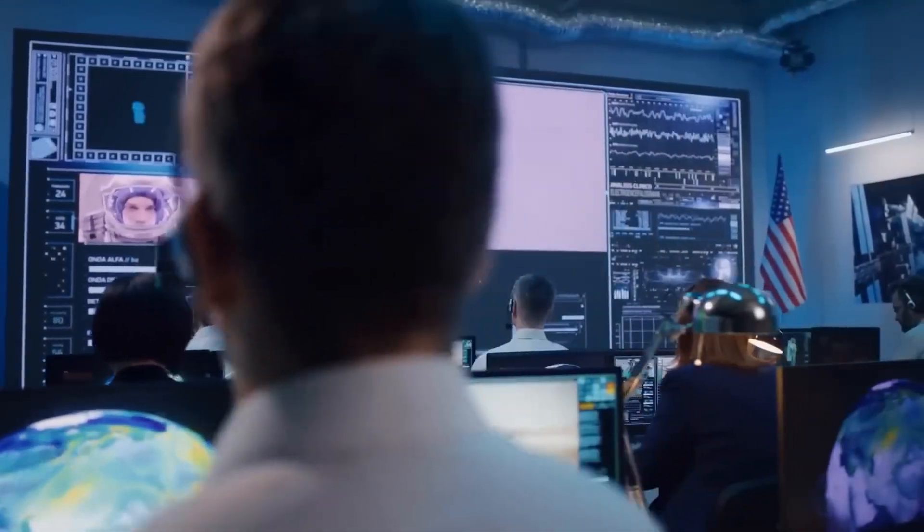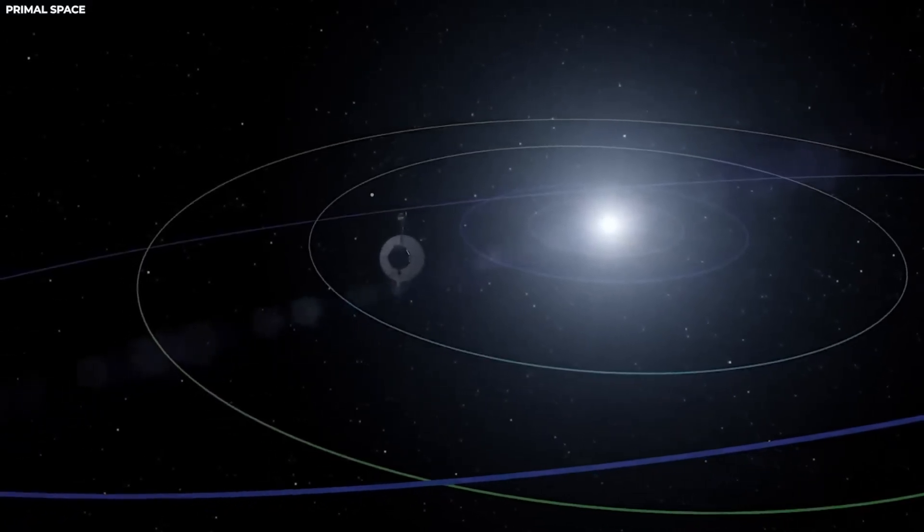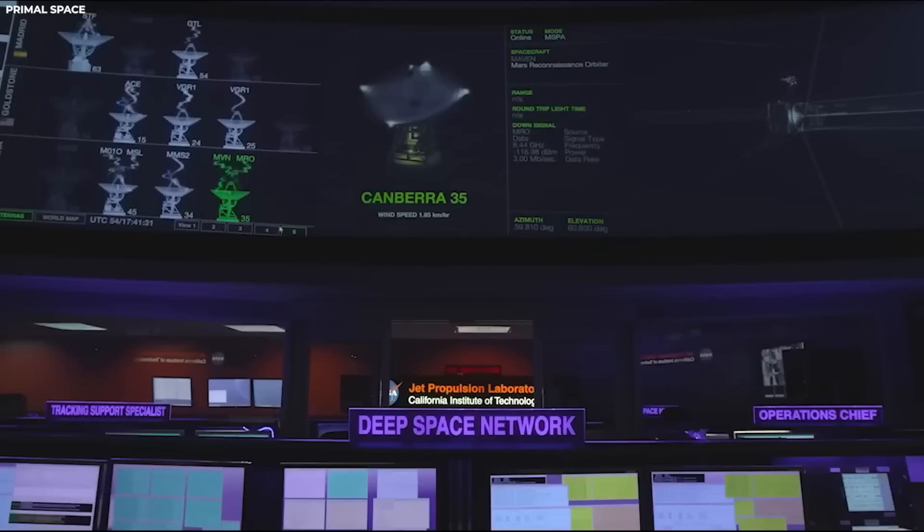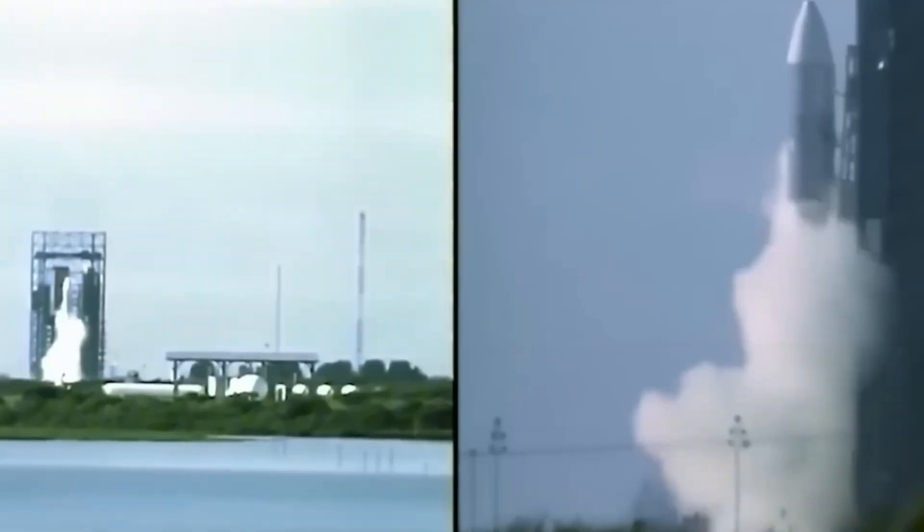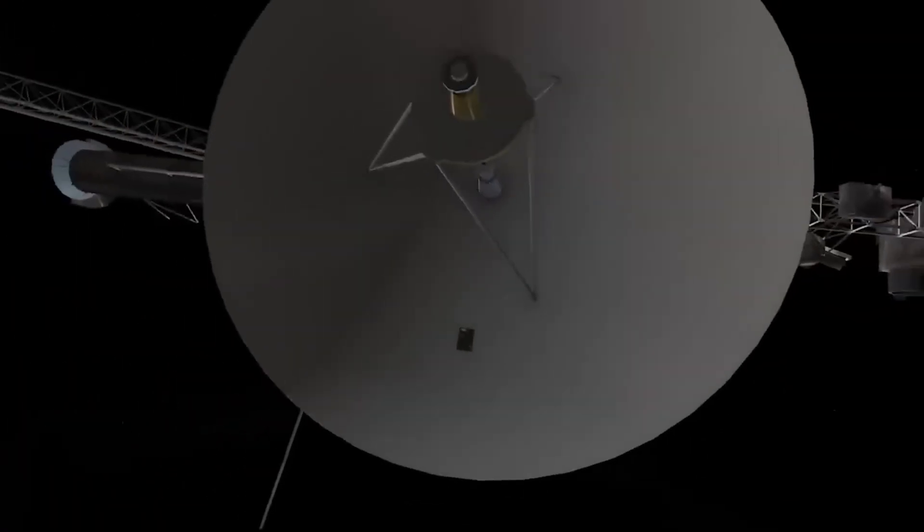Voyager has sustained operations by utilizing backup systems over the years, for instance. In 2017, it successfully used thrusters first activated during its planetary encounters in the 1970s. These thrusters had been inactive for 37 years but still functioned when needed.